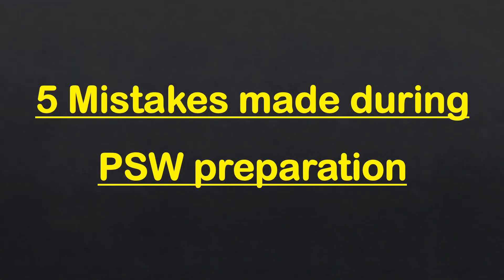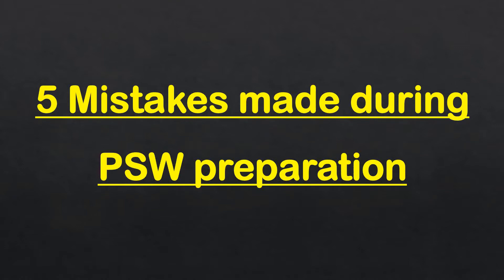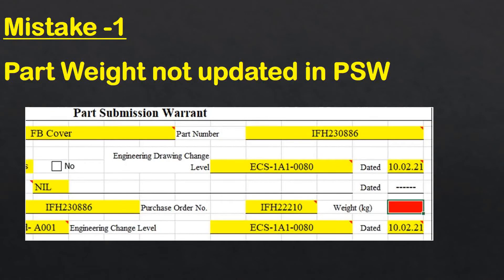Let us now understand the five mistakes made during PSW preparation. Mistake number one: people miss mentioning the part weight in the PSW. You have to mention the final product weight in the PSW — it is mandatory for all future references.